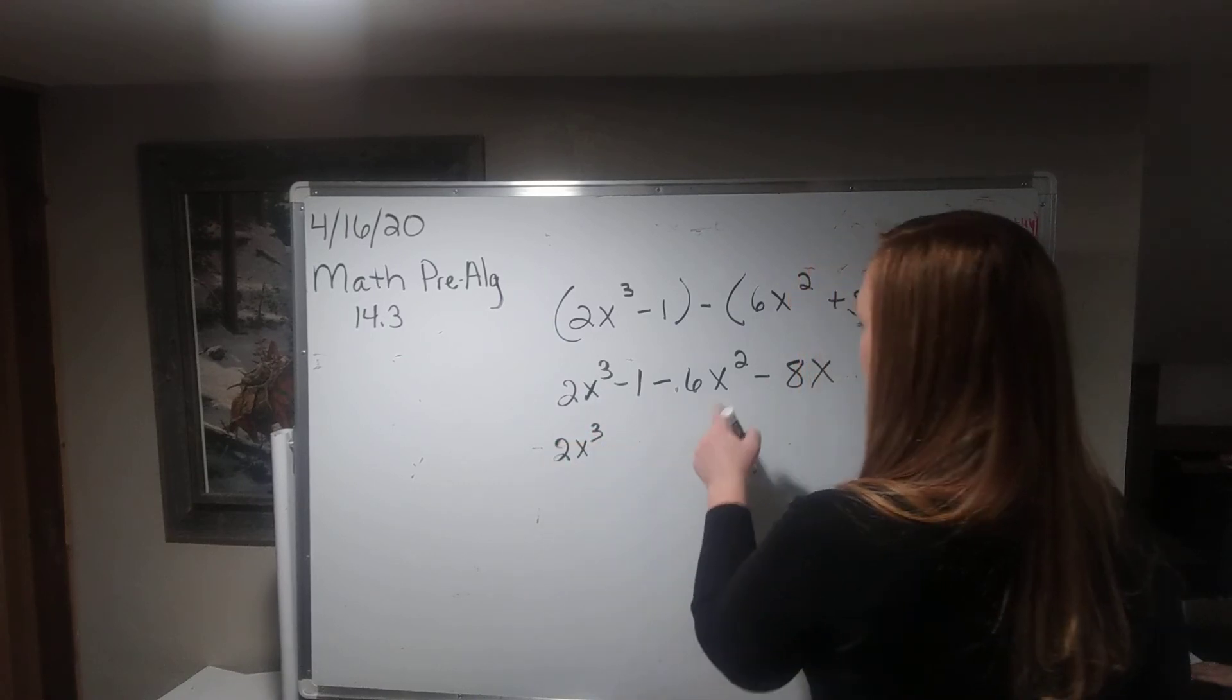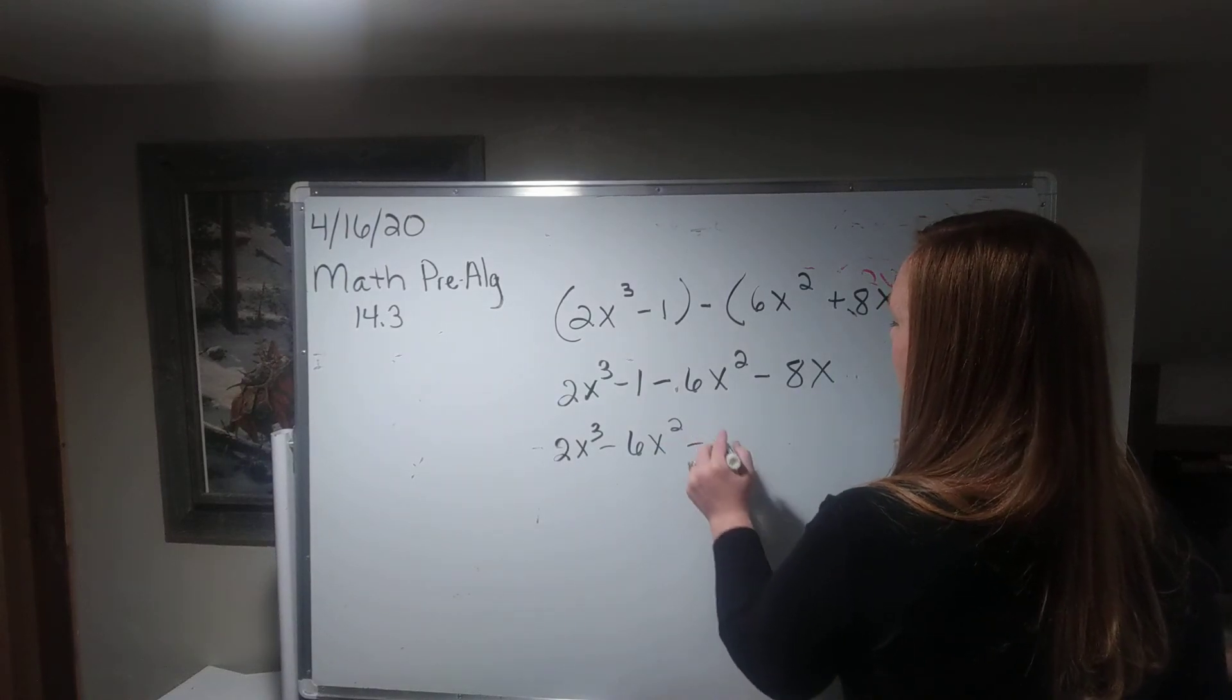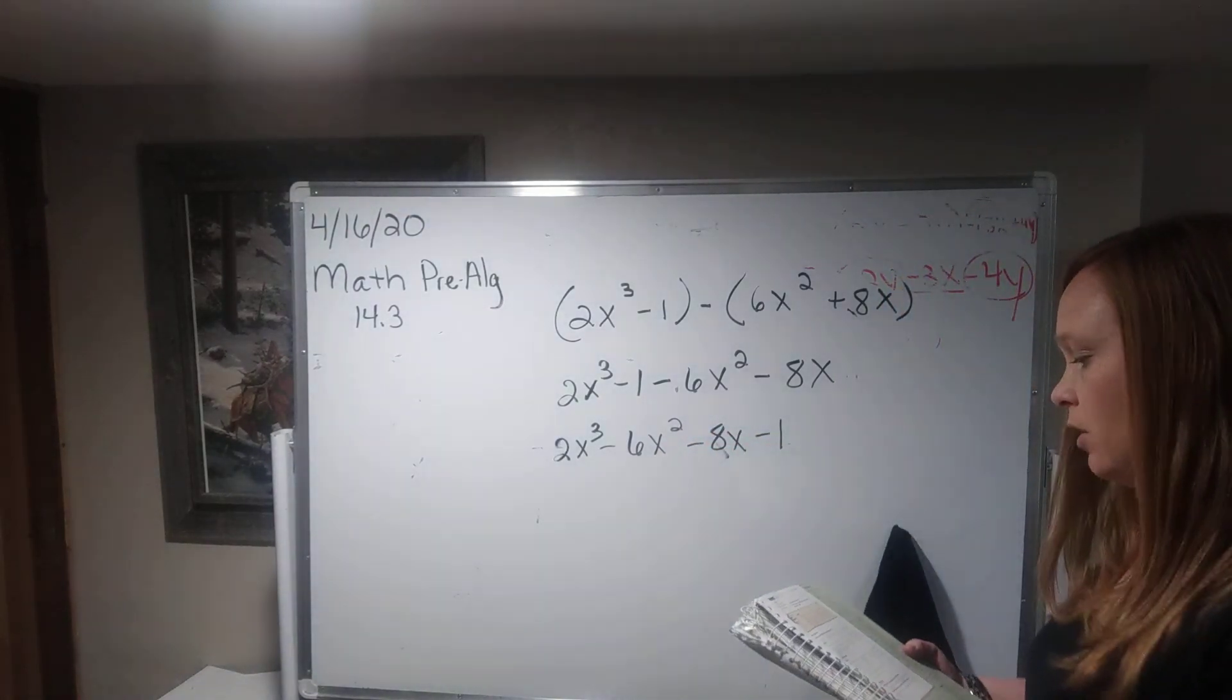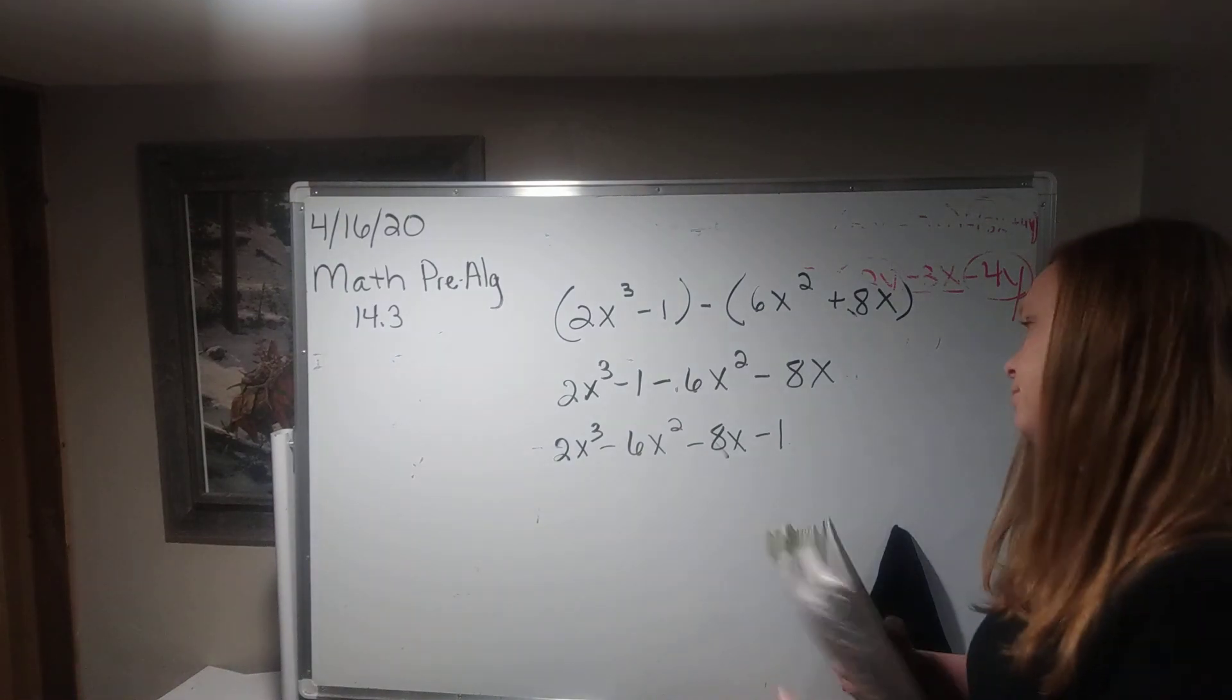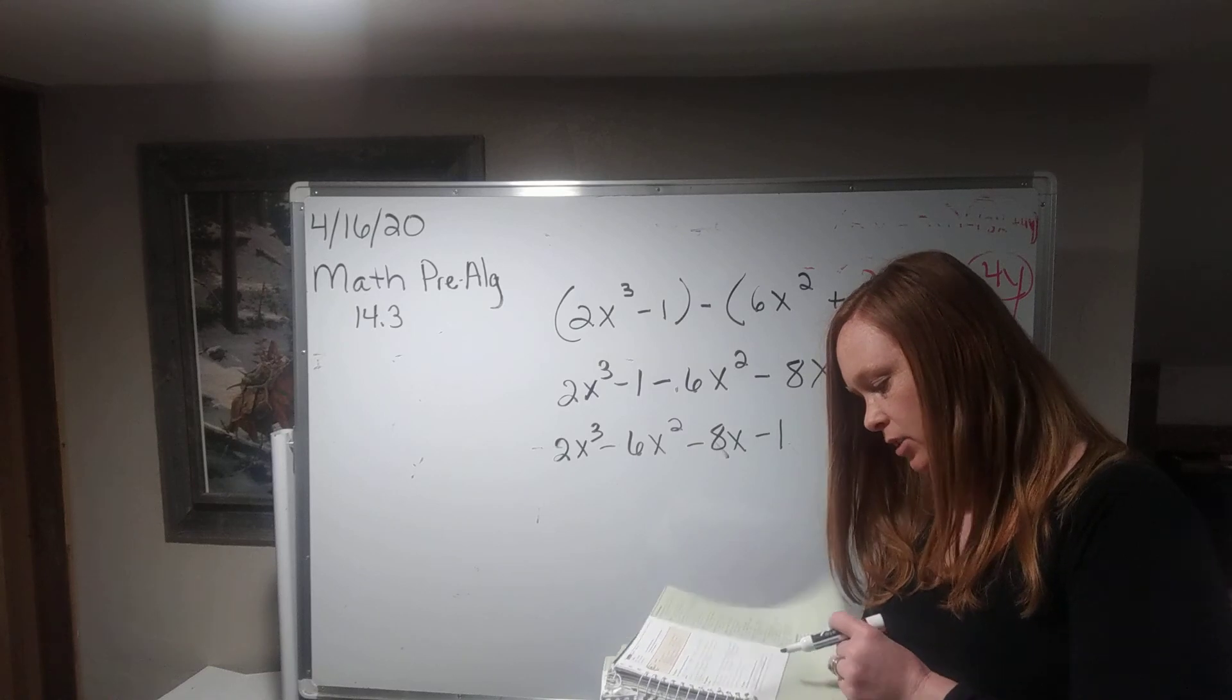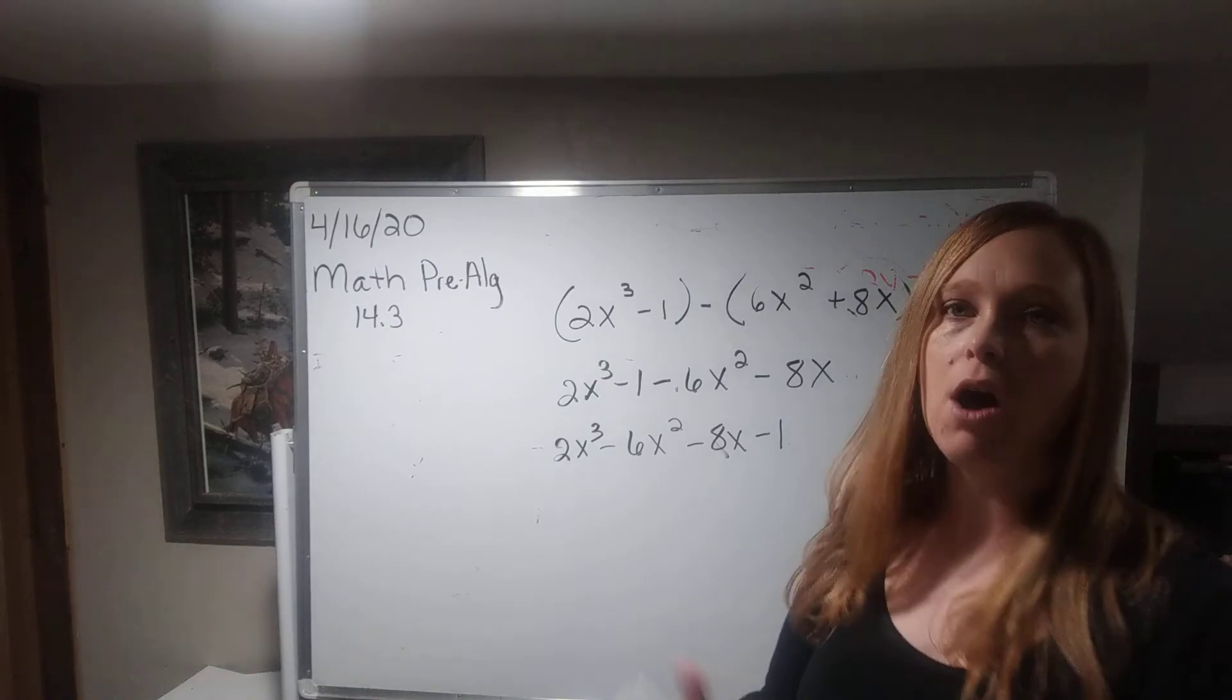2x cubed minus 6x squared minus 8x minus 1. And that would be the correct answer. Okay. All right. So for your work today, let's do numbers 1 through 33 odds.